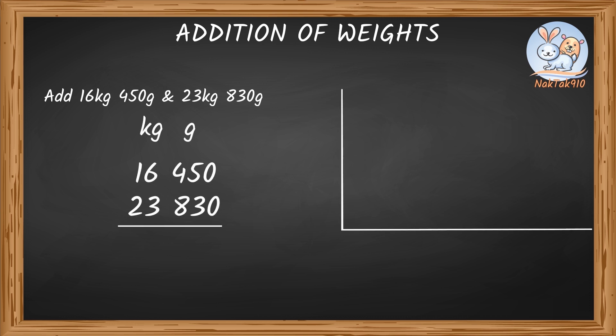Let's start adding from left to right. So, let's add g column first. 0 plus 0 equals 0. Now, add the next column, 5 plus 3 equals 8. Now, add the next column. 4 plus 8 equals 12. 1000g equals 1kg. So, 1280g equals 1kg plus 280g. So, we can group this and carry to the next kg column. Now, we are done adding the g column.